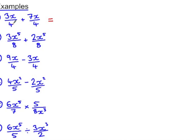Firstly, we have a common denominator of 4 and we can add together 3x and 7x to get 10x. Then this fraction simplifies because numerator and denominator are both divisible by 2. So this is 5x over 2.